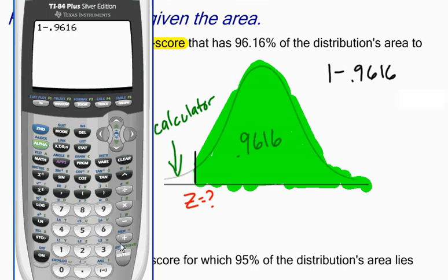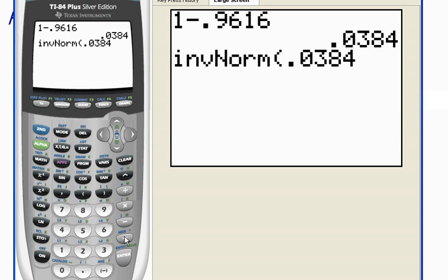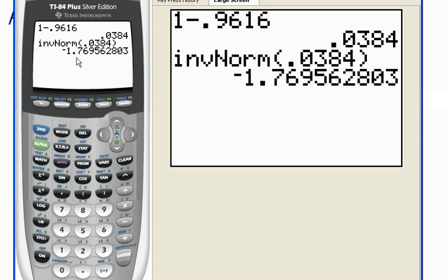So I'm going to go second, vars, number three, inverse norm, for 0.0384. And when I hit enter, it gives me the z-score that cuts off the top 96.16%.